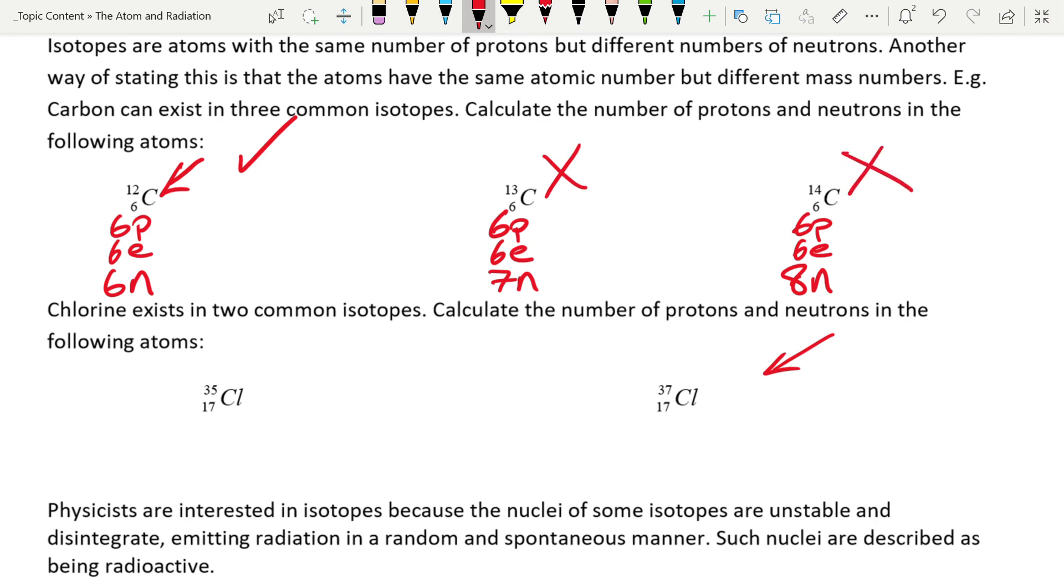We describe those unstable nuclei as being radioactive. At some point in the future, they will disintegrate—they will change what they are. They will emit some type of radiation in a random manner. It's that that the rest of this booklet is interested in. So some isotopes are stable and some aren't. The ones that aren't will disintegrate in the future and emit radiation.